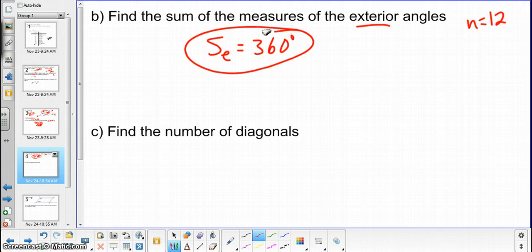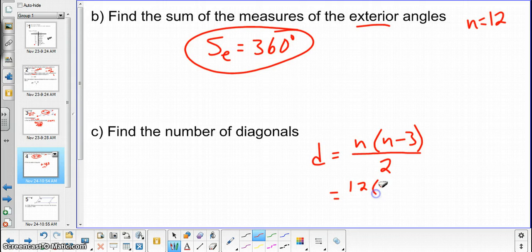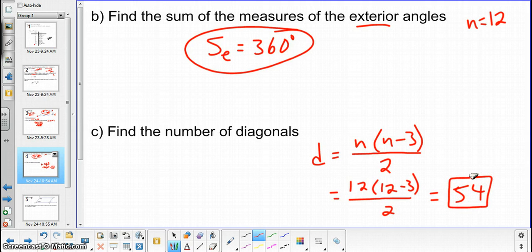C, find the number of diagonals. Now we're referring to our formula, which is n times quantity n minus 3 divided by 2. And we have our number of sides, again, is 12, so we'll plug that into our formula. And that would be equivalent to 54 total diagonals in a dodecagon.